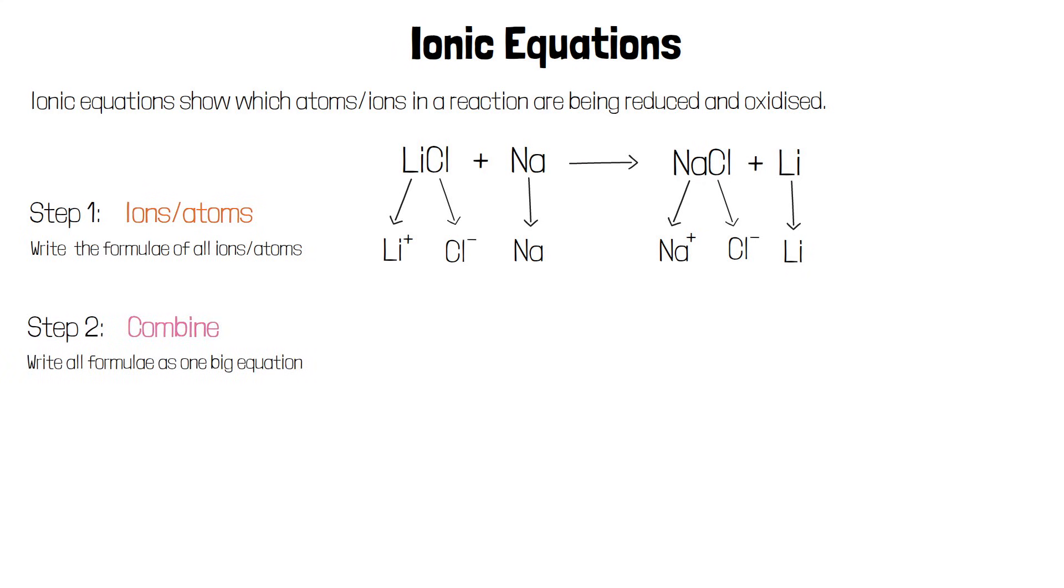Now that we have the formulae of all of the atoms and ions written out, the next step is to combine them into one big equation. All the atoms and ions in the reactants on one side and all the atoms and ions in the products on the other.